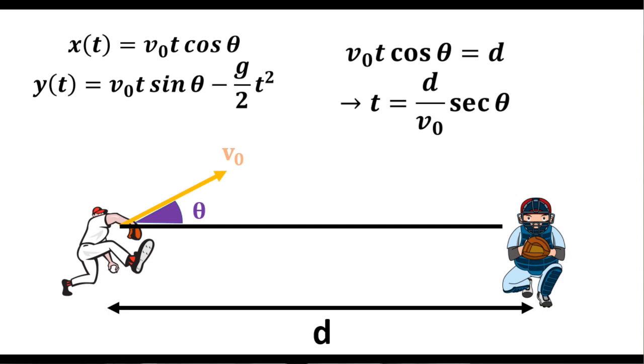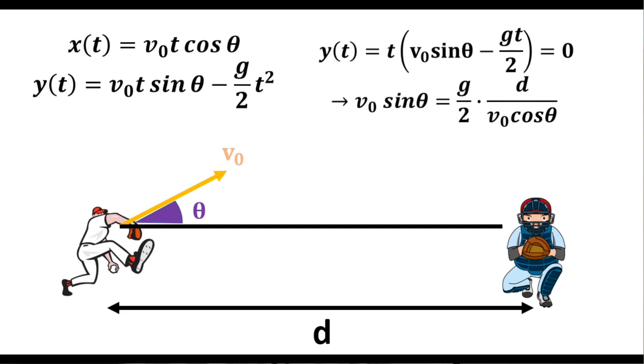So solving for tf, we get that tf is equal to d over v0 times secant of theta. Factor the y of t, and we can see that v0 sine theta equals g over 2 times the final time. Plugging in the d over v0 secant theta, we get that v0 sine theta equals gd over 2 v0 cosine of theta.